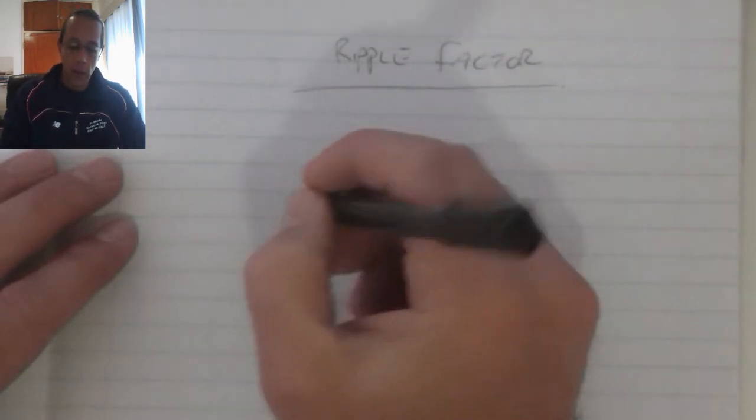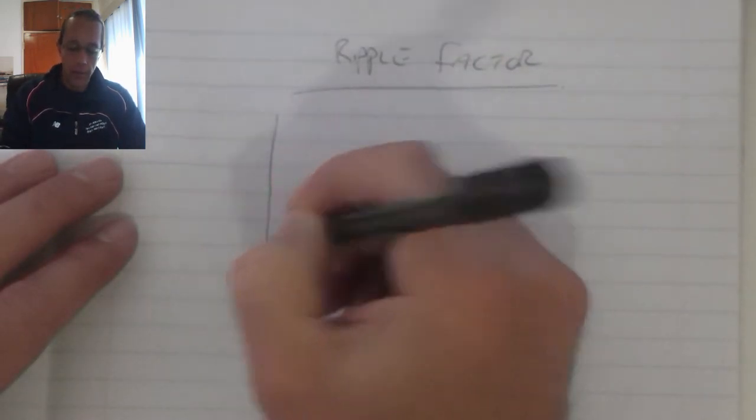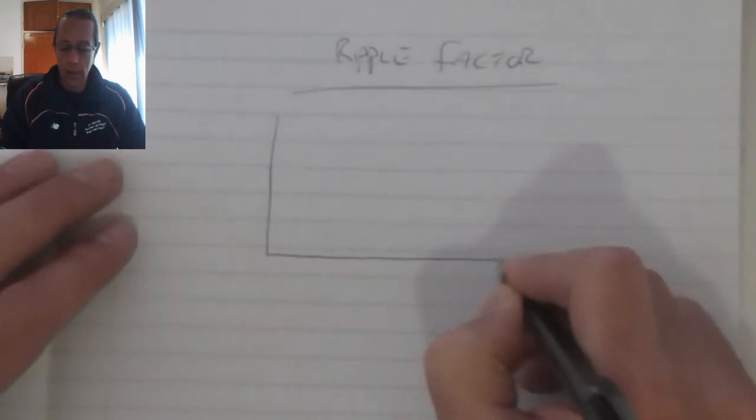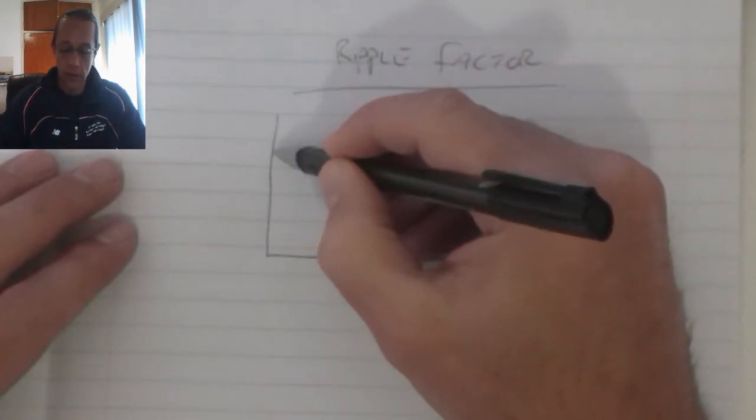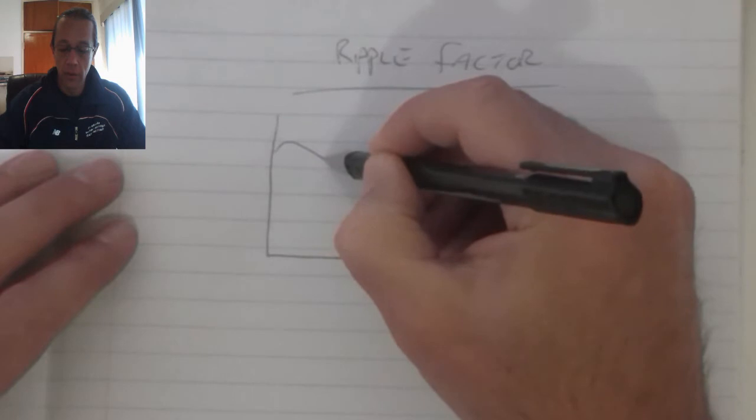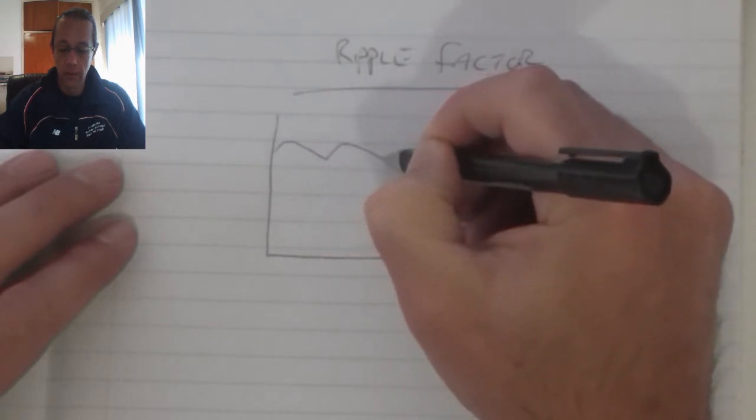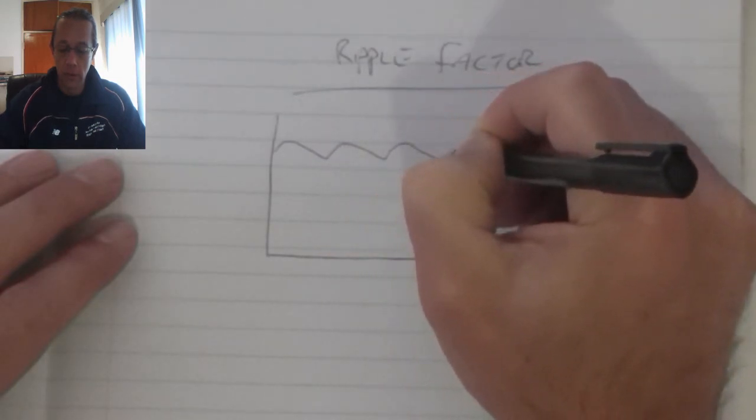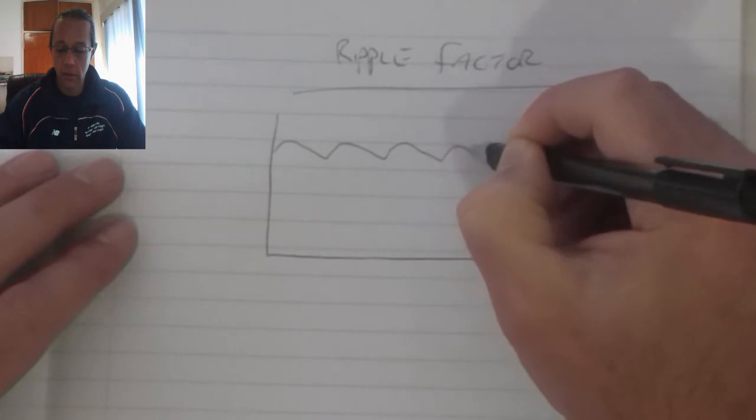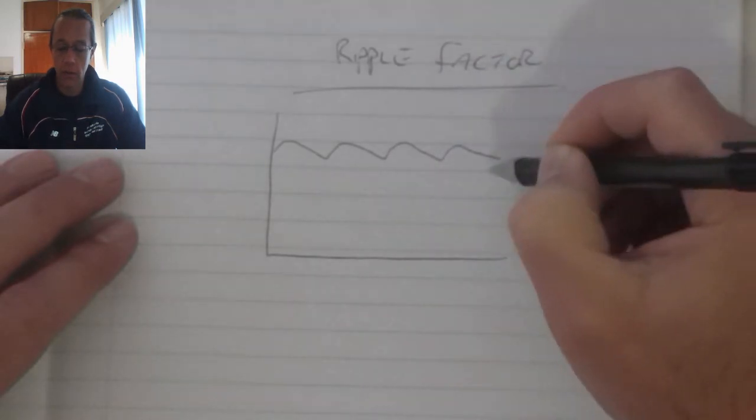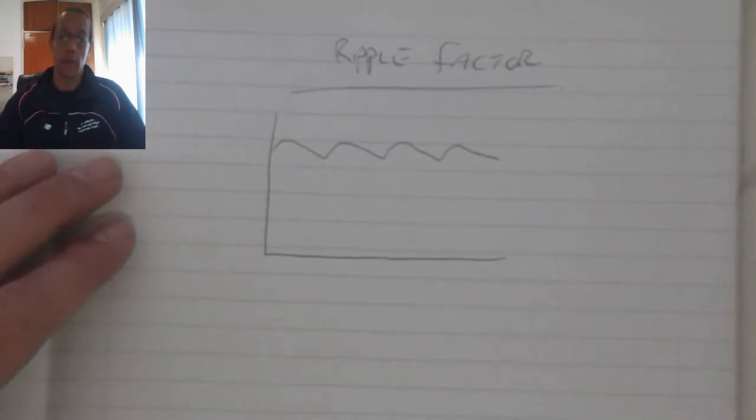Ripple factor. When looking at the output of a filter, we find that there is a ripple that occurs due to the filter that looks something like that.